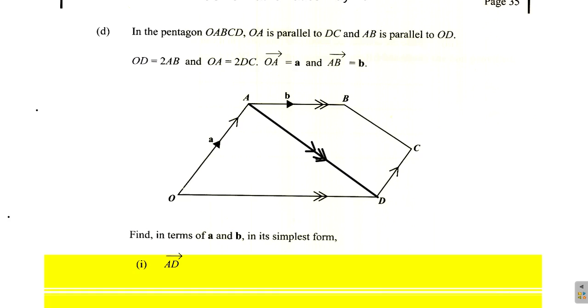We want AD. Now you can go from A to D along vector AD, or you can use an alternate route. Go from A to O, then O to D, and you end up in the same place. So what you can say is AD is equal to AO plus OD.